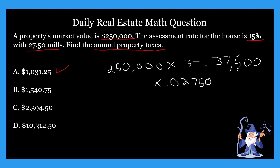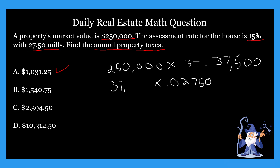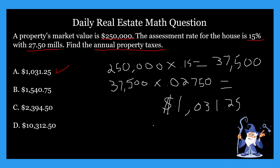So our other number is the assessed value of $37,500. We're taking that $37,500 and multiplying it by our mill rate of 0.02750. That is going to give us $1,031.25, which is our answer — that is the annual property taxes on this problem.